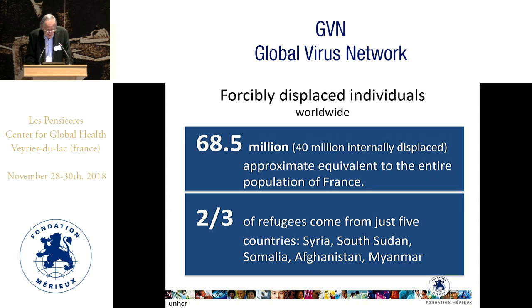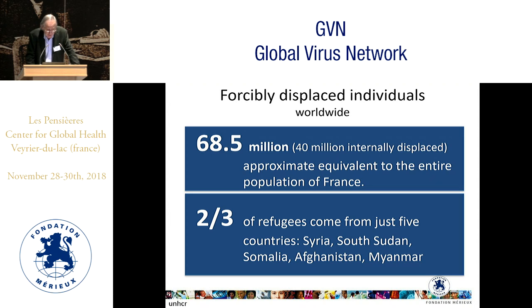Currently the estimate is around 70 million forcibly displaced persons. 40 million of those are internally displaced, and 28 million are crossing borders and moving to other countries — equivalent to the entire population of France. Two-thirds of those refugees come from just five countries: Syria, South Sudan, Somalia, Afghanistan, and recently also Myanmar, formerly Burma.